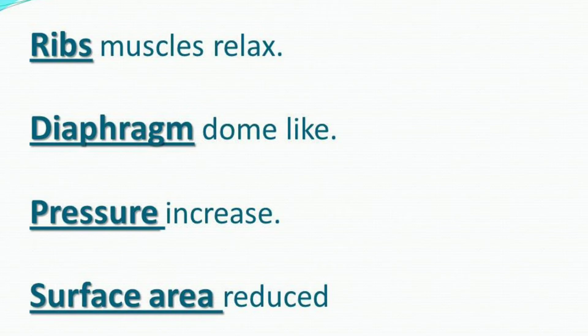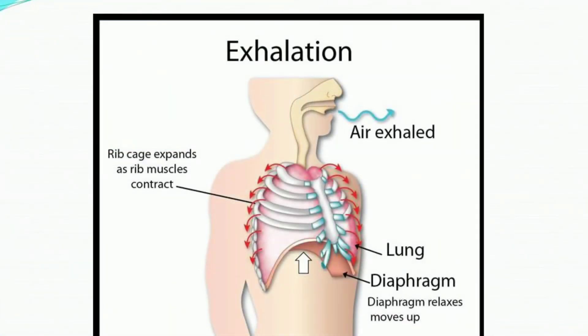गौर से देखें — जैसे हम सांस को बाहर exit करते हैं Lungs से, तो हम relaxing position में आ जाते हैं। Ribs Muscle relax होगा, जैसे ही Ribs Muscle relax होगा तो Diaphragm जो हमारा सीने का सारा region है वो dome-like हो जाएगा। Surface area reduces होगा, और जो pressure increase हुआ था वो हवा के जरिए Lungs से बाहर आ जाएगा। I hope आपको Exhalation और Expiration का अमल अच्छे तरीके से समझाया होगा।